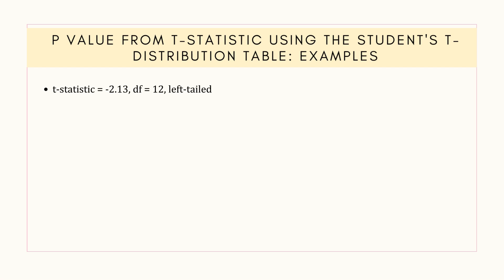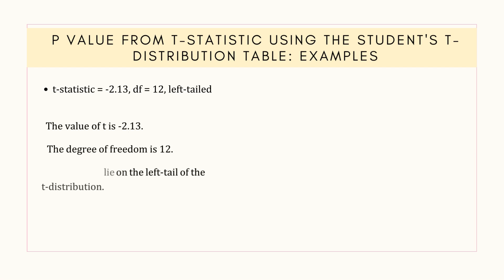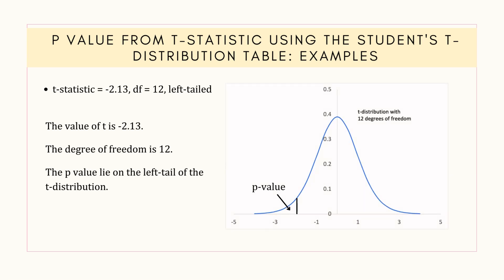In the first case, the t-statistic is minus 2.13. The t-statistic follows a t-distribution with 12 degrees of freedom and the p-value lies on the left tail of the t-distribution. In the t-distribution plot, the area under the curve on the left side of the t-value of minus 2.13 represents the p-value.